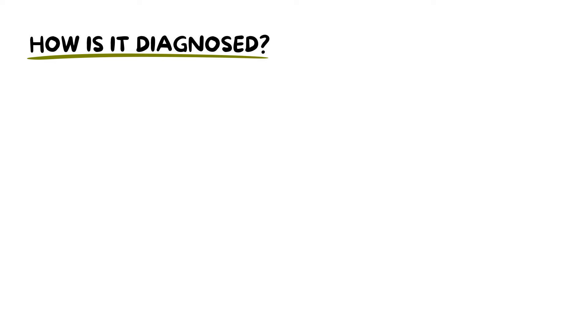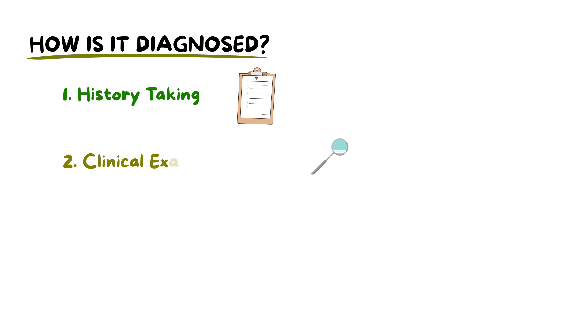Diagnosing squamous papilloma begins with taking a thorough patient history. This includes gathering details about the onset of the lesion, its duration, and any potential exposures to HPV. Following the history, a clinical examination is carried out, during which the clinician focuses on identifying the distinct cauliflower-like appearance of the papilloma, particularly in common sites such as the tongue and inner cheeks.